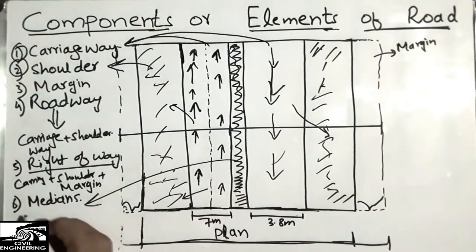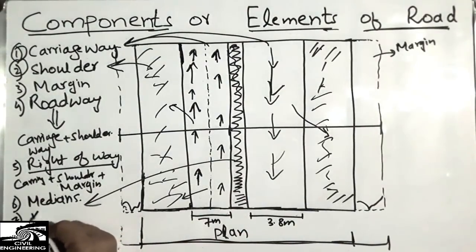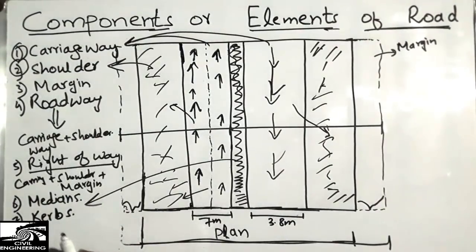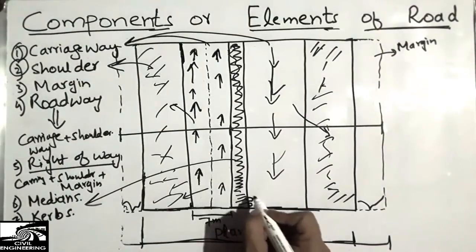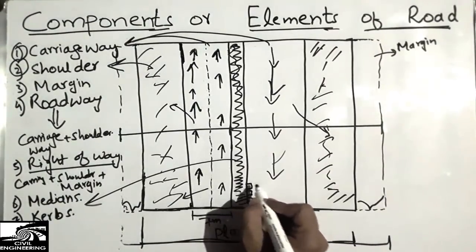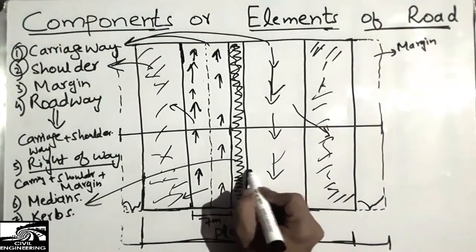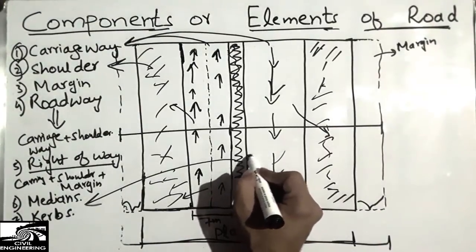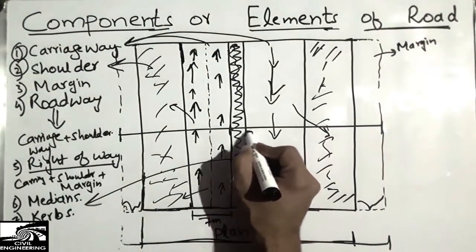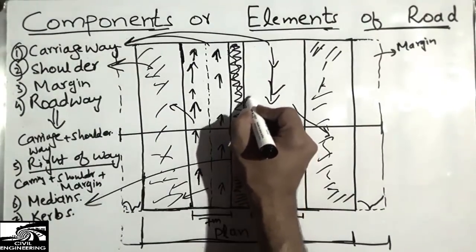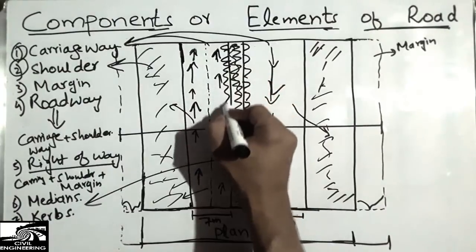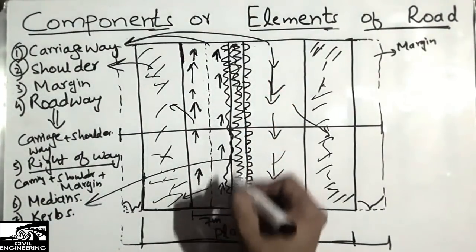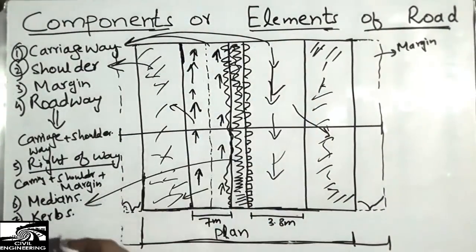The seventh component is the curbs. Curbs are provided along the medians. You can also see in the pictures provided — each picture shows these road components. Curbs are provided throughout the medians on both directions of the road.